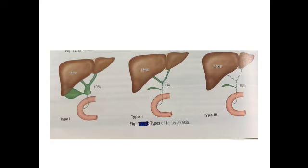This is the schematic representation showing type 1, type 2, and type 3 biliary atresia. In type 1 only the common bile duct is involved. In type 2, the common bile duct and common hepatic duct are involved. In type 3, the common bile duct, common hepatic duct, and right and left hepatic ducts are all involved. So type 1 is 10%, type 2 is 2%, and type 3 is 88%.